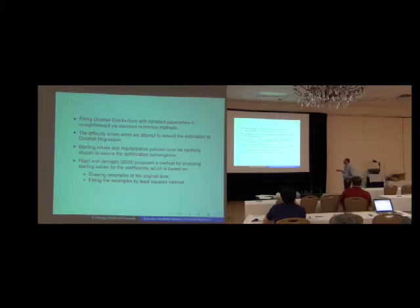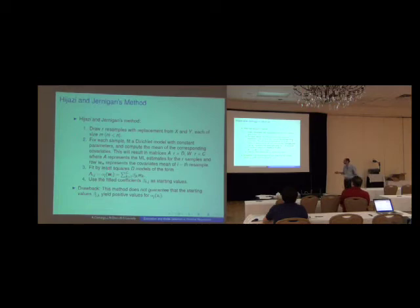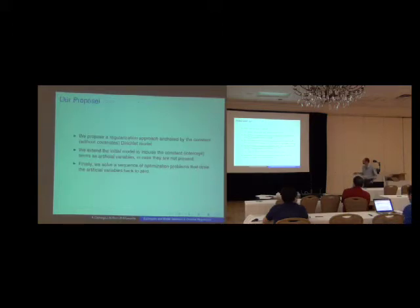Starting values and regularization policies must be carefully chosen to assure the optimization convergence. Rejas and Jernigan proposed a method for choosing starting values which is based on drawing resamples of the original data and for this set of resamples they propose to fit the resamples by least square methods. The drawback is that this method does not guarantee that the starting values for the coefficients yield positive values for alpha. And this constraint is mandatory since the Dirichlet is only defined for positive values for the hyperparameters.